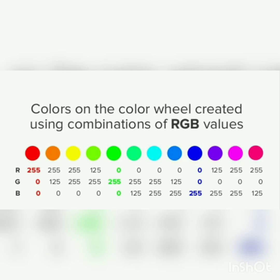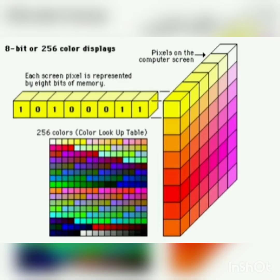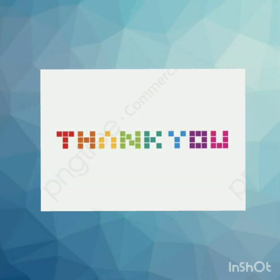The RGB intensity ranges from 0 to 255. Depending on the intensities, the color shades vary. We get total 1024 color combinations in computer graphics. Thank you for watching the video.